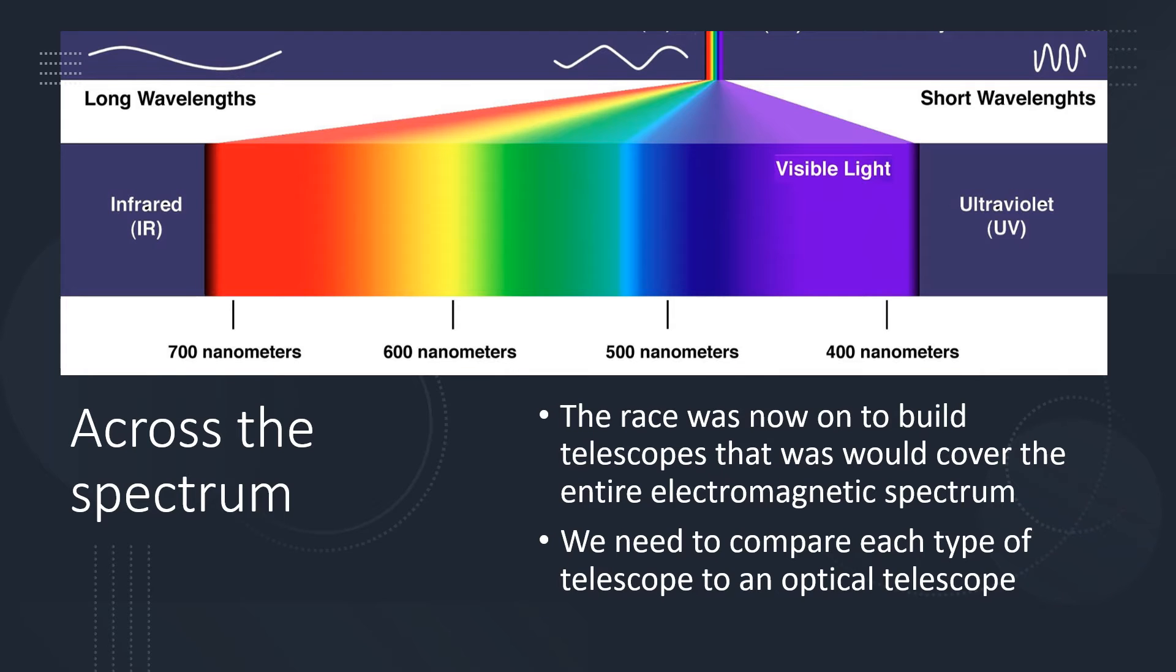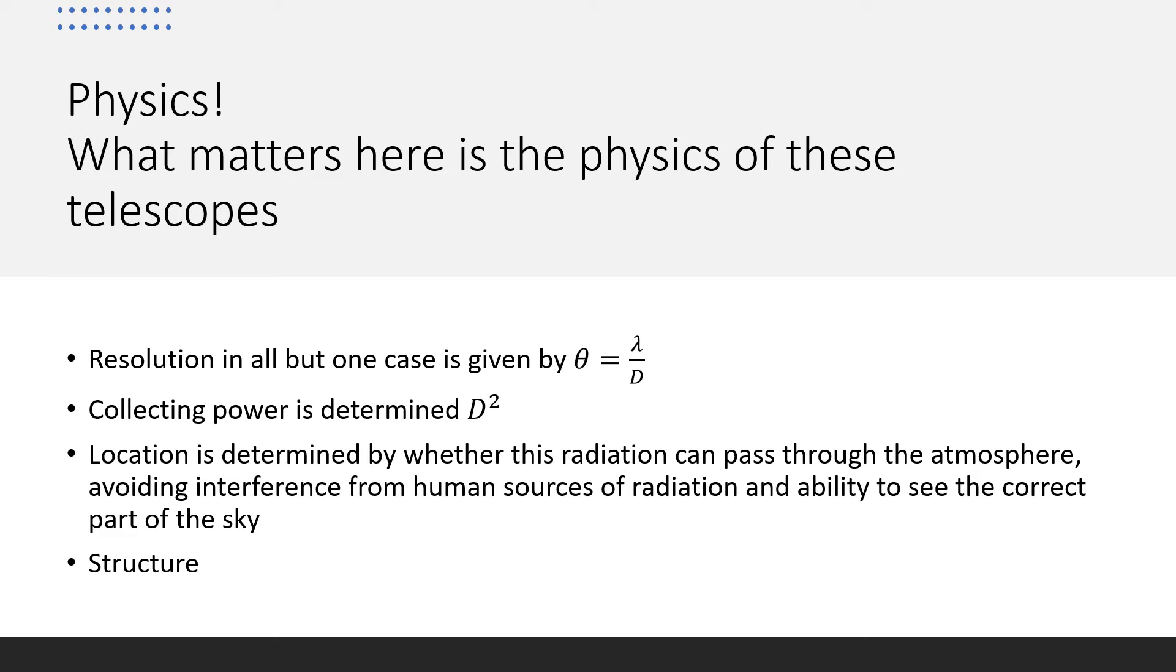It's quite difficult to observe different parts of the spectrum. When we discuss this, it's very important that we're thinking about solid physics behind everything. The resolution in all but one case is still given by theta equals lambda over d, the Rayleigh criteria. The collecting power is still determined by d squared, and the radiation is also determined by basic physics such as the atmosphere, avoiding interference from human sources of radiation, and ability to see the correct part of the sky.